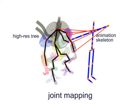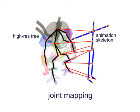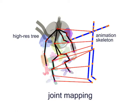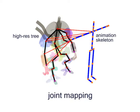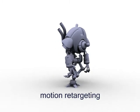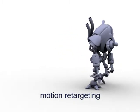During joint mapping, we find the optimal mapping between nodes in the high-resolution clustering and the joints of the animation skeleton. This allows transferring the motion of the animation skeleton to the input model.